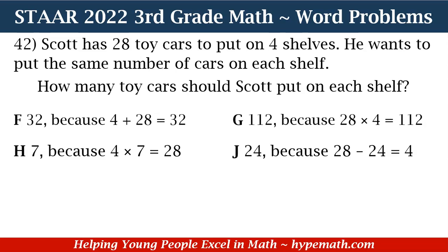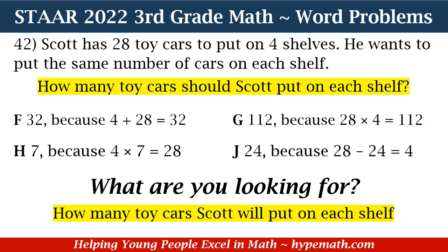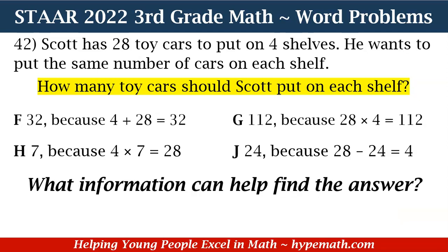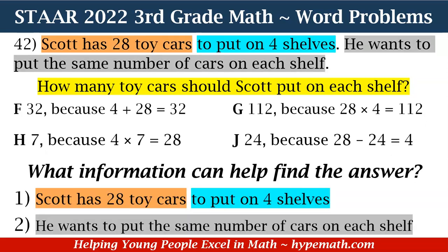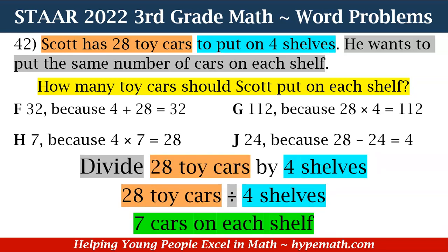In order for us to solve this problem, our first question needs to be: what are we looking for? We are looking for how many toy cars Scott will put on each shelf. What information can help find the answer? Scott has 28 toy cars that he's going to put on four shelves, and he wants to put the same number of cars on each shelf. So how do we solve this problem? We need to divide 28 toy cars by four shelves. 28 divided by four is equal to seven, so there will be seven cars on each shelf.